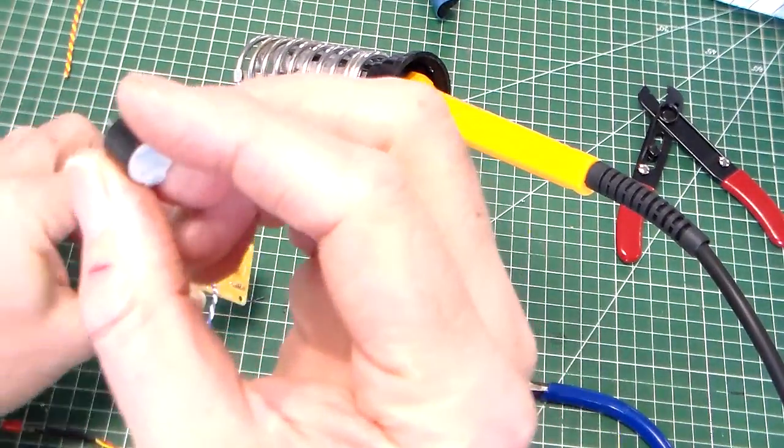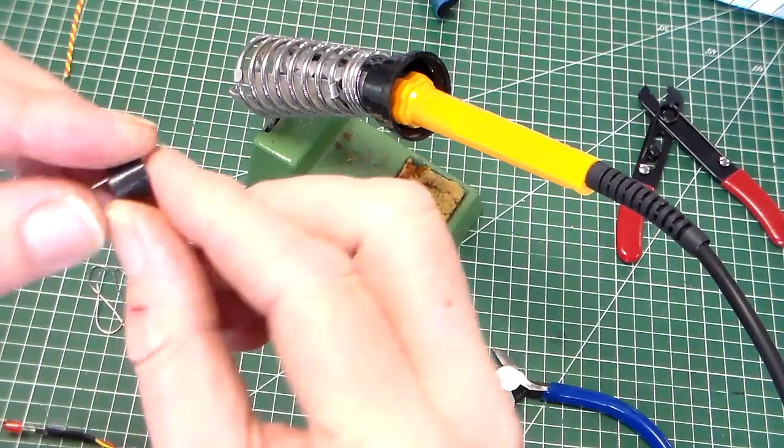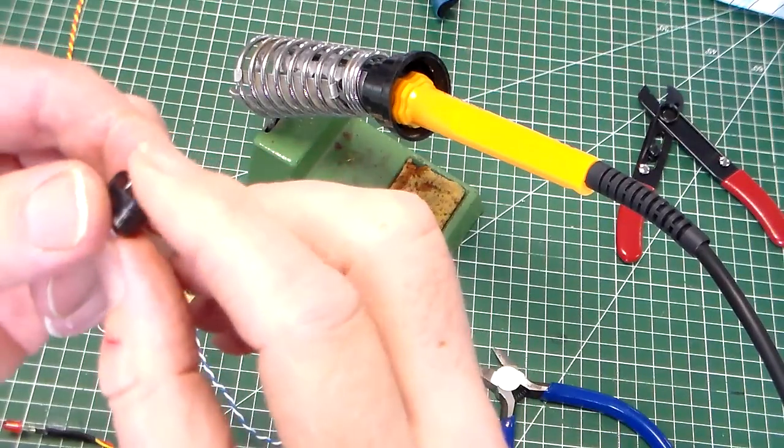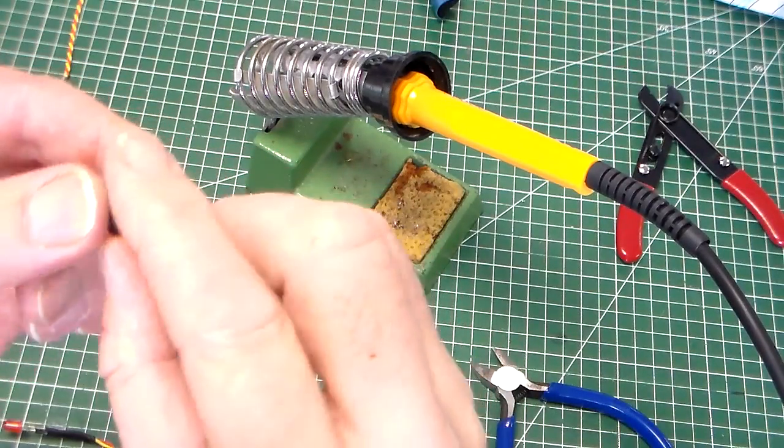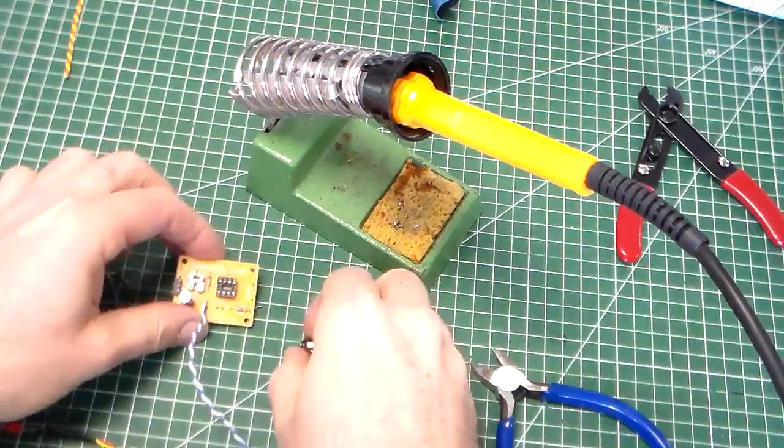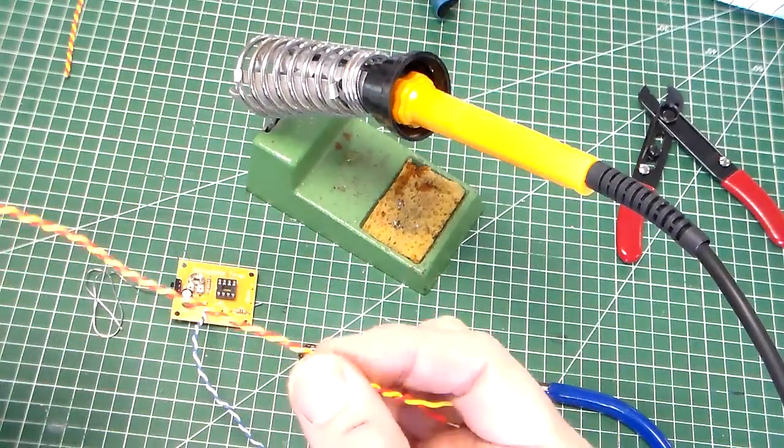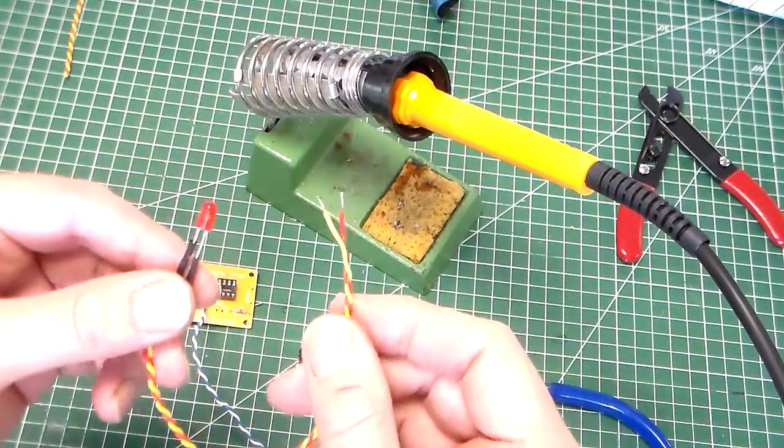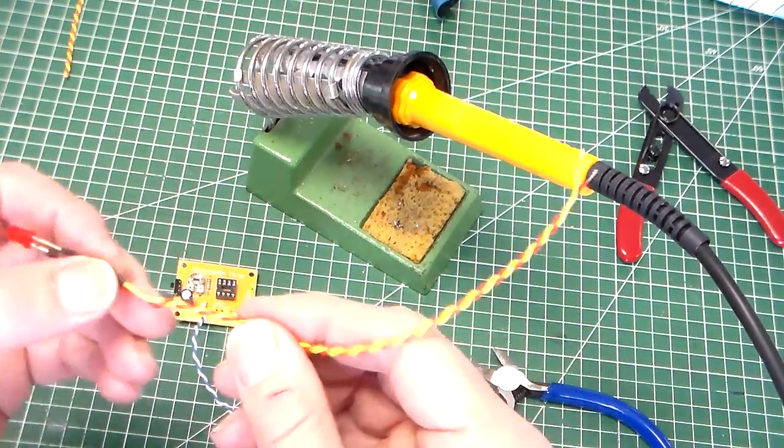The buzzer is a small PCB mounted device with two legs, and the LED is on a fly lead which we manufactured earlier.